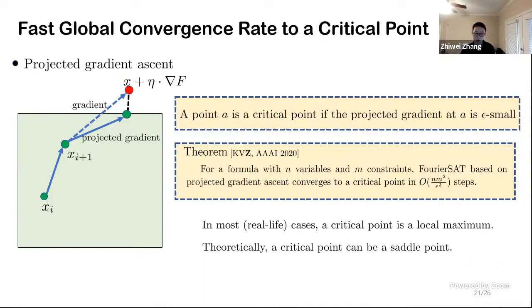But what does a critical point look like? In most real-life cases, critical points are just local maxima, which we proved that they have good quality. But theoretically speaking, a critical point can still be a saddle point. So you can see a gap here. On one hand, we prove that local maxima are meaningful, but on the other hand, we can only prove that we will converge to a critical point.